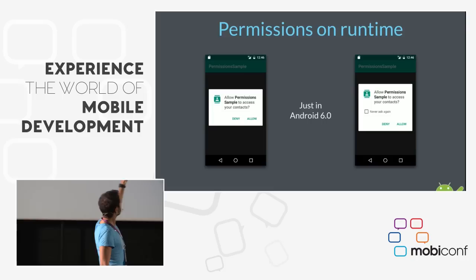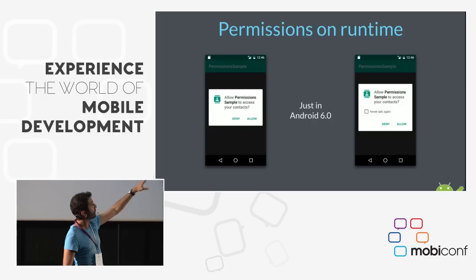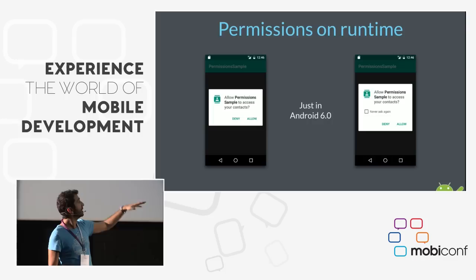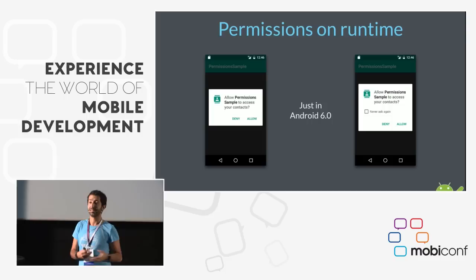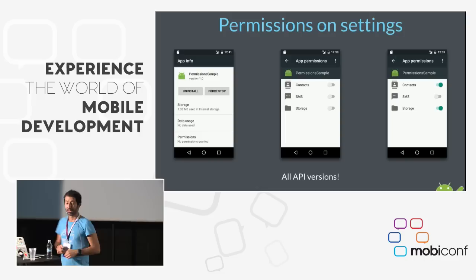The user can deny or allow the permission. If the user denies the permission, the second time they try to do the same thing we'll show the same dialogue, but now it adds a 'Never ask again' checkbox. If the user marks this checkbox and clicks deny, we cannot ask again for this permission — the user has said they don't want to be disturbed again with this permission request.